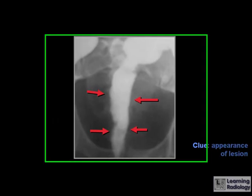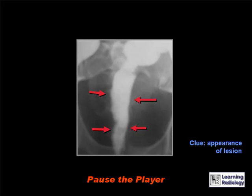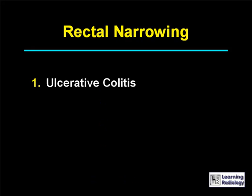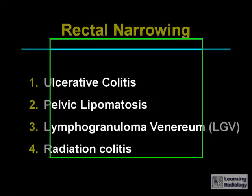The differential diagnosis is for rectal narrowing. There are four causes: ulcerative colitis, pelvic lipomatosis, lymphogranuloma venereum, and radiation colitis.